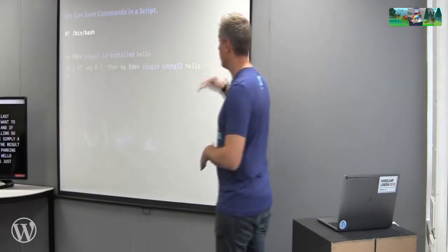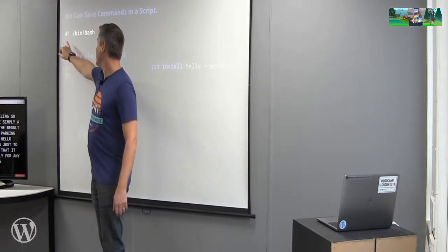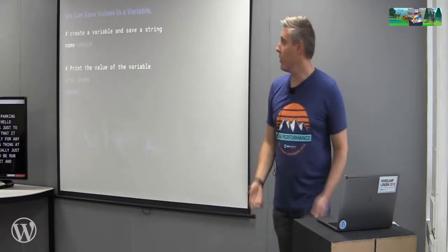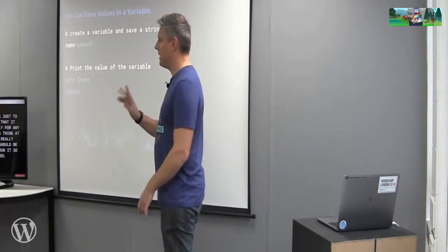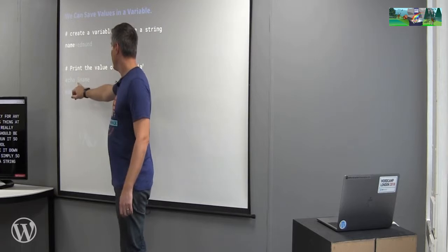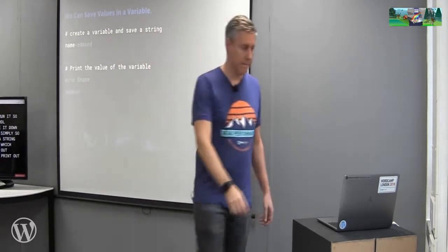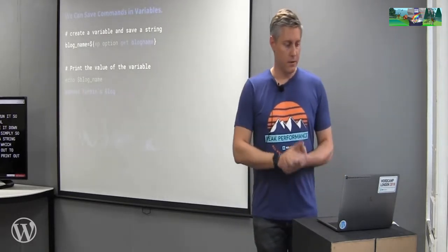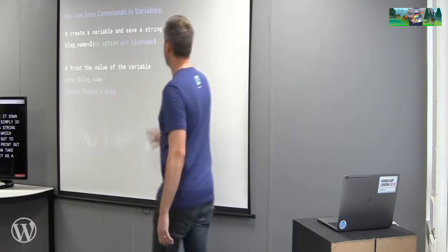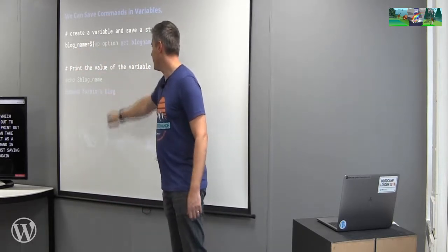Because everyone wants to install Hello Dolly, right? Taking the comments out, you can see it's really simple and clear. For any Bash script you're going to need the 'shebang' at the top — it tells the system what application should run the file. Variables are created very simply: 'name=Edmund' gives it a string, and the echo command prints that variable to screen. You can also take the output of a command and save it as a variable by putting the command in brackets — for example, saving the blog name as a variable and then echoing it.